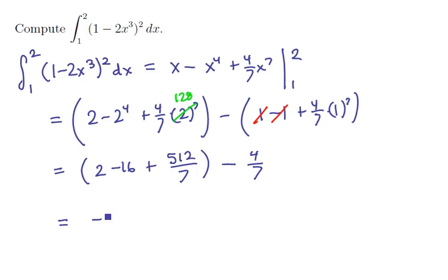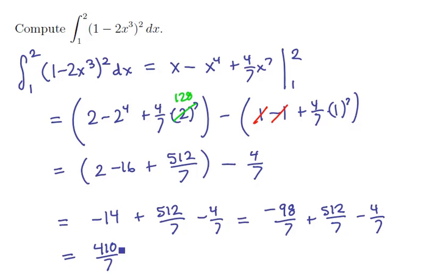If we put everything on a common denominator, we're going to have -14 + 512/7 - 4/7, or -98/7 + 512/7 - 4/7. If we put all of those numbers together, we get 410/7. There's our definite integral.